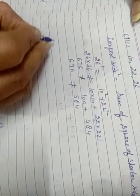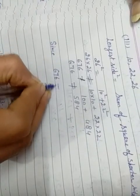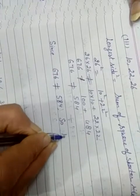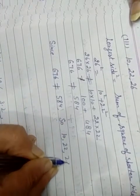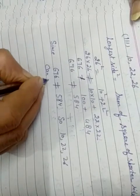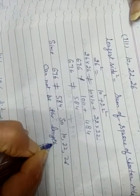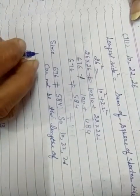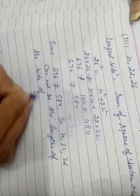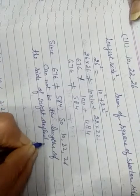Since 676 is not equal to 584, so 10, 22, 26 cannot be the length of the side of a right angled triangle.